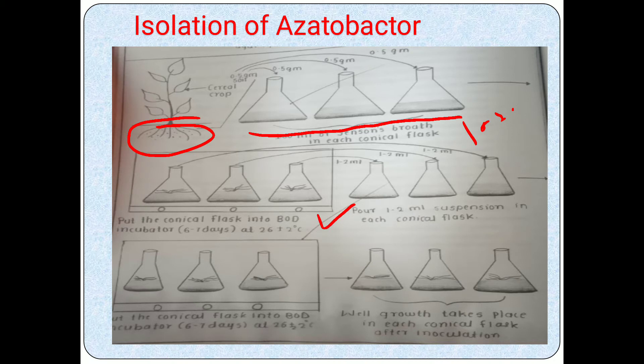Incubate in the BOD incubator for a period of six to seven days at a temperature of 26 plus or minus 2 degrees Celsius. At that temperature, fast growth of Azotobacter takes place. Within six to seven days, colonies of Azotobacter are observed.